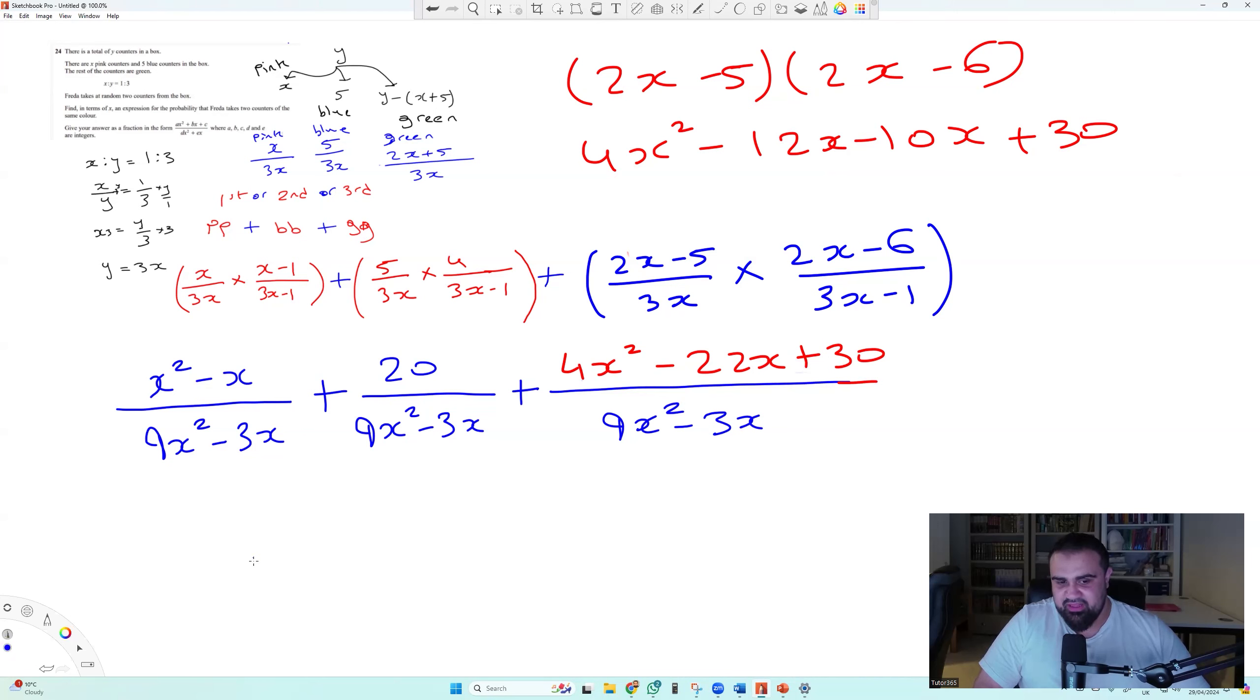So now the final answer is the whole denominator is 9x squared minus 3x. x squared plus 4x squared is 5x squared. 5x squared minus 23x plus 50. And that is the final answer. That was the final answer. Just to clarify, you know the green probability we messed up at the start.